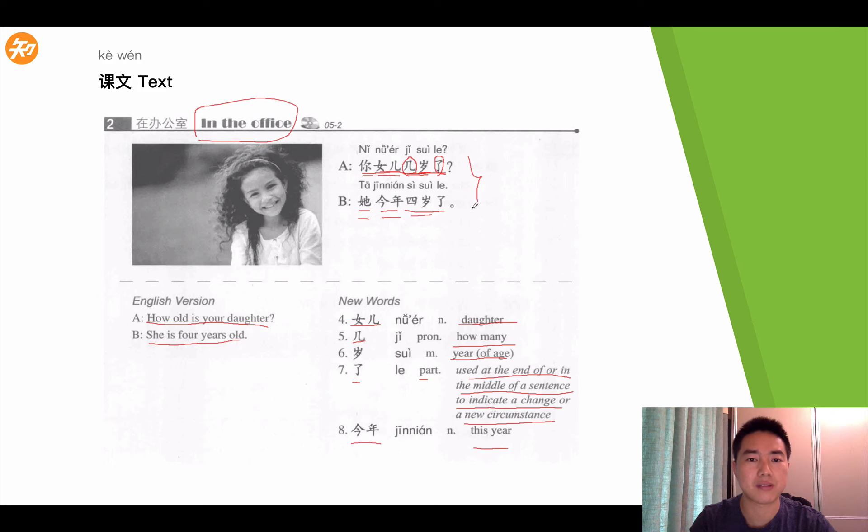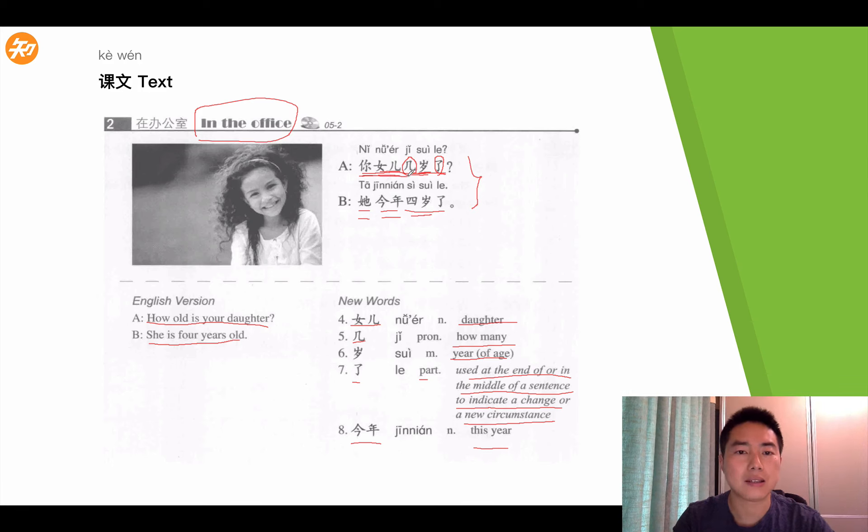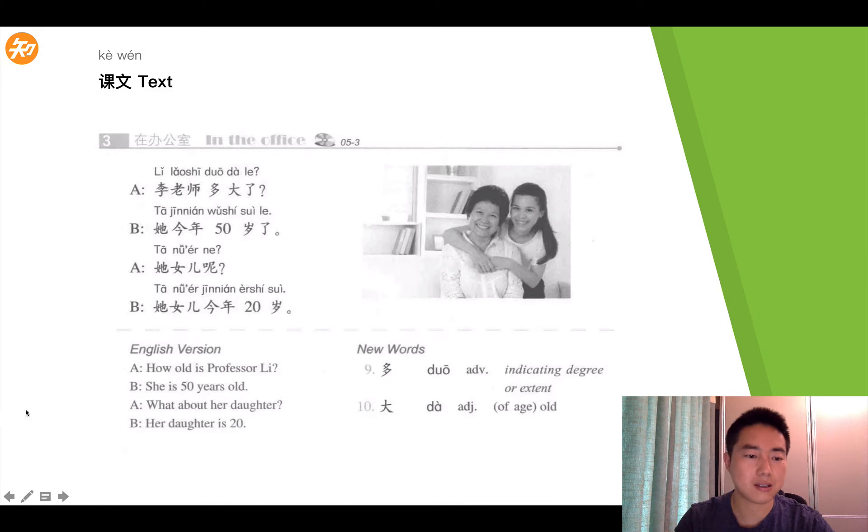Okay, let's have a quick review of this conversation. A said, 你女儿几岁了? B answered, 她今年四岁了。Okay, let's go to the next text.